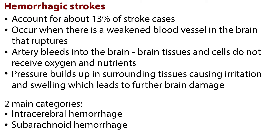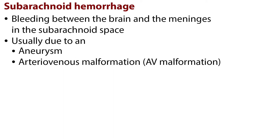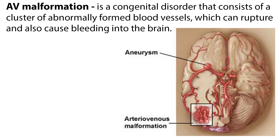Hemorrhagic strokes are divided into two main categories: intracerebral hemorrhage and subarachnoid hemorrhage. Intracerebral hemorrhage involves bleeding from the blood vessels within the brain and is usually caused by hypertension. Bleeding occurs suddenly and quickly, and there are usually no warning signs — it may be severe enough to cause death. Subarachnoid hemorrhage results from bleeding between the brain and the meninges in the subarachnoid space, and is usually due to an aneurysm or an arteriovenous malformation, or AV malformation. An aneurysm is the ballooning of a weak area on an artery wall which, if left untreated, will continue to weaken until it ruptures and bleeds into the brain. Aneurysms may be congenital or may develop later in life due to hypertension or atherosclerosis. An AV malformation is a congenital disorder that consists of a cluster of abnormally formed blood vessels, which can rupture and also cause bleeding into the brain.